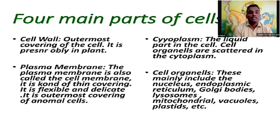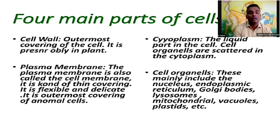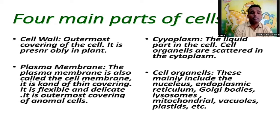The cell wall is the outermost covering of the cell and is present only in plants. You can see the picture of a plant cell — the cell wall is only present in the plant and it is the outermost cover. It protects the internal components of the cell. The plasma membrane is also called the cell membrane. It is a thin, flexible, and delicate covering that is the outermost covering of animal cells, protecting the inner part.